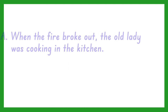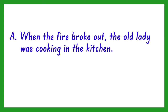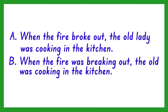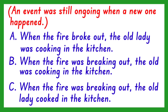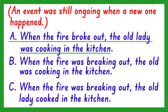Last one. A: When the fire broke out, the old lady was cooking in the kitchen. B: When the fire was breaking out, the old lady was cooking in the kitchen. C: When the fire was breaking out, the lady cooked in the kitchen. Since an event was still ongoing when another one happened, the answer is A. The ongoing event should take the past progressive tense of the verb, and the second event takes the simple past form.